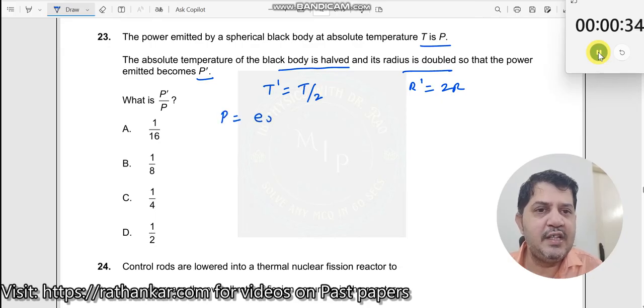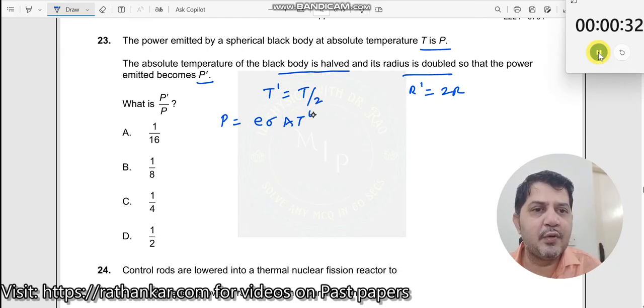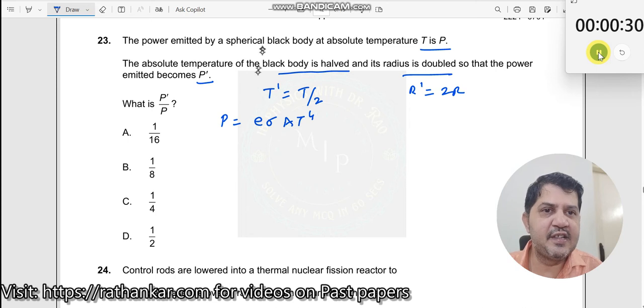P equals E sigma A T to the power 4. This is what we have to use. Since it's a black body, E becomes 1. What is P' by P? For P, since it's a spherical body, I can write this as sigma times 4 pi R squared times T to the power 4.